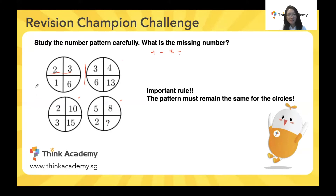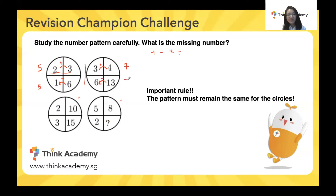Let's look at our first circle. We try two plus three, which gives us five. Can we make five with the two numbers in the second row? Yes — six minus one also gives us five. So both rows give the same result, which could be a pattern. Let's test this on the next circle: four plus three gives us seven, and 13 minus six also gives us seven. Again, the result for the first row and second row is the same.